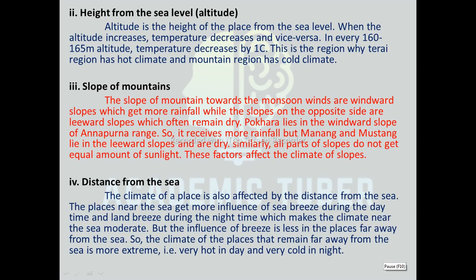The next factor is distance from the sea. The climate of a place is also affected by its distance from the sea. Places near the sea get more influence of sea breeze during the daytime and land breeze during the nighttime, which makes the climate near the sea moderate. But the influence of breeze is less in places far away from the sea, so the climate there is more extreme — very hot in the day and very cold at night. A soft and gentle wind that blows mainly in coastal areas is called a breeze, categorized into land breeze and sea breeze. The flow of cold air from sea to land during daytime is known as sea breeze, whereas the flow of air from land to sea during nighttime is known as land breeze.